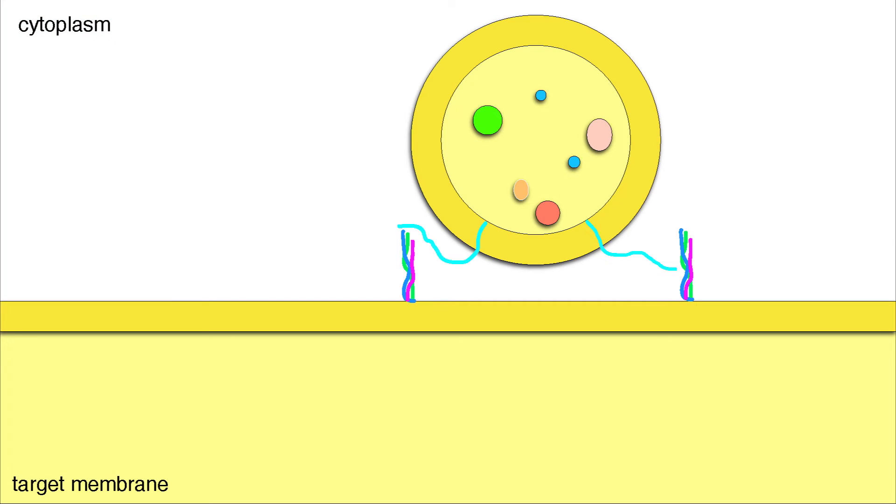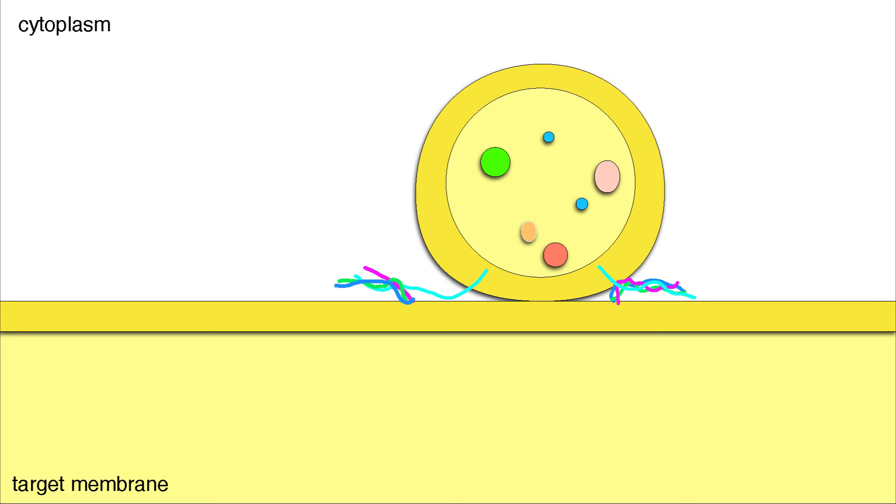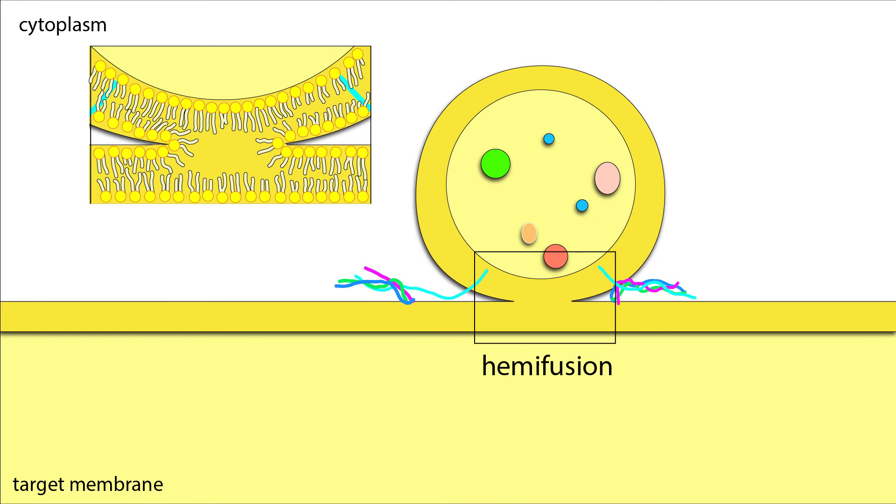In all cases of vesicle fusion, this coiling of snare proteins tightens the gap between vesicle and target membranes, squeezing out any water in between them. Snare coiling releases the energy needed to overcome the repulsion between the polar heads of the two membranes. When the membranes get close enough, hydrophilic heads from each membrane spontaneously flip directions, causing the closest layers of the two membranes to merge together.